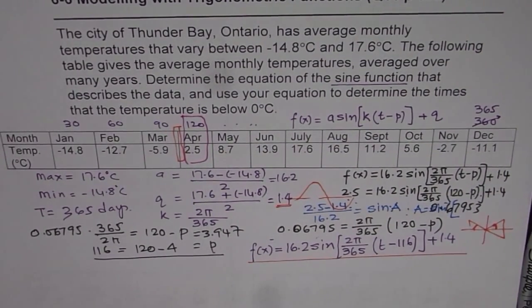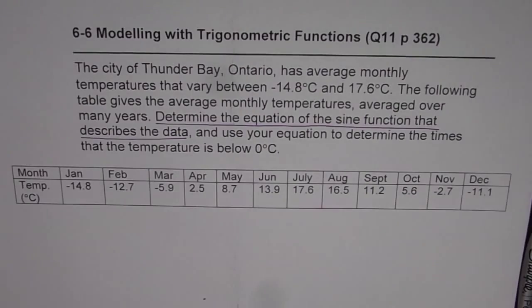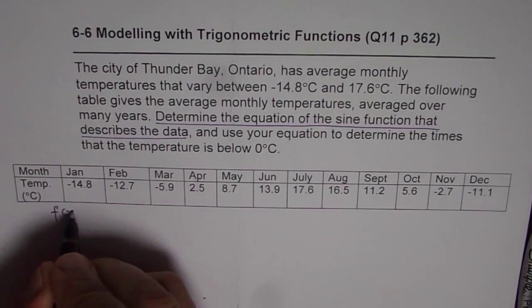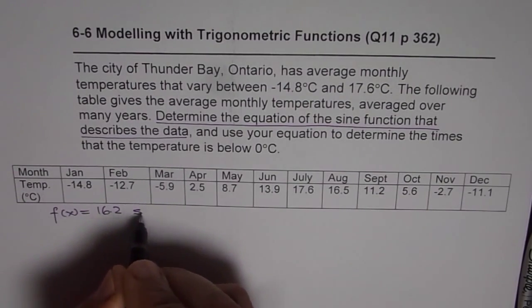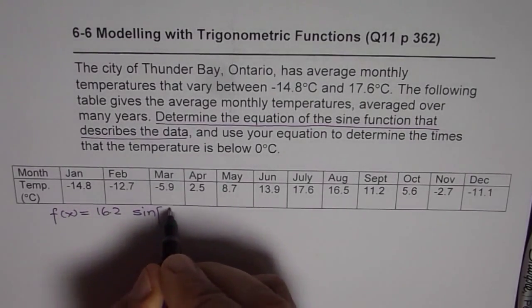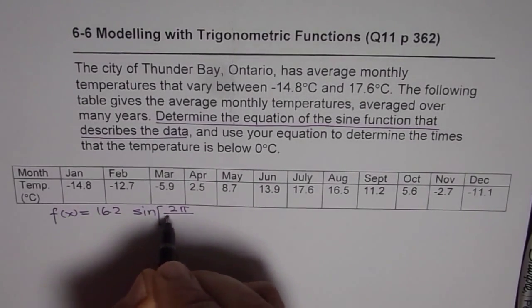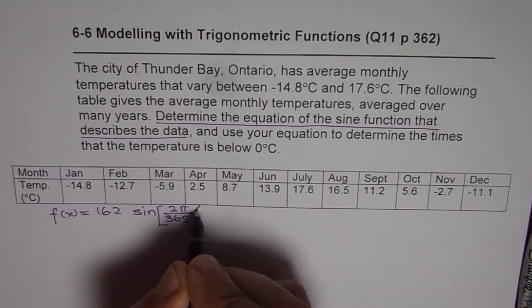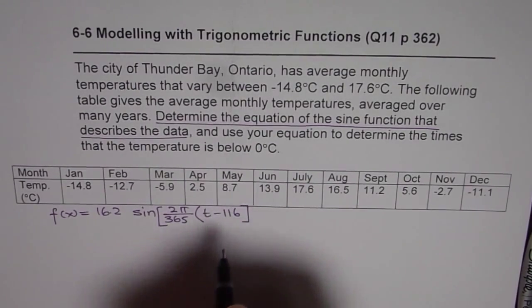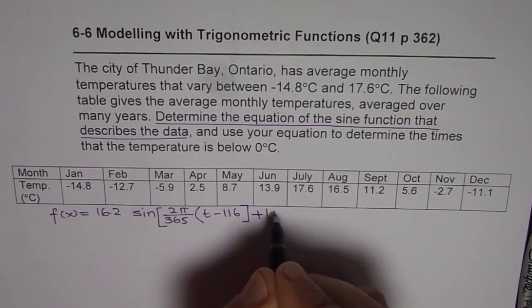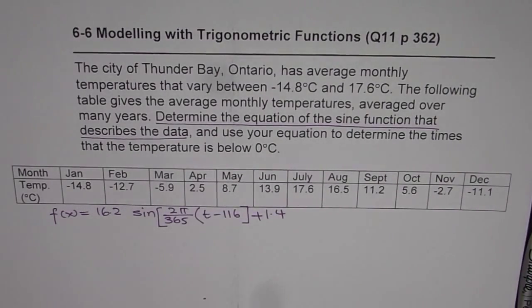So I will write down the equation here and do part 2. So the equation was that the function f of x is equal to 16.2 sine of 2 pi over 365 t minus 116 plus 1.4. So that is the equation which we derived. And in this part of the video,